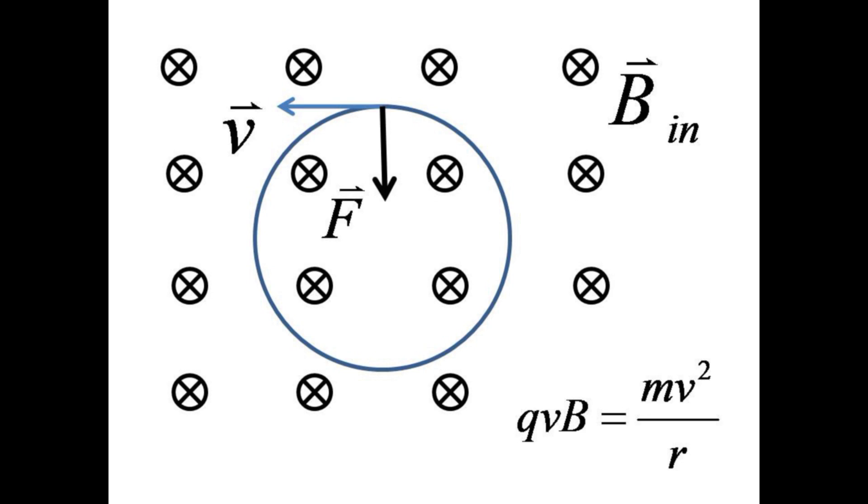We now move on to an amazing experiment that uses the force on a beam of electrons to determine the mass of an electron. A particle entering a region of uniform magnetic field with v perpendicular to B will always experience a force at right angles to its motion, and therefore follow a circular path. Setting the magnetic force equal to the centripetal force gives the equation qvB equals mv squared over r, where r is the radius of the orbit.